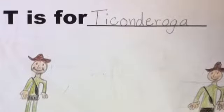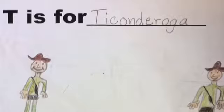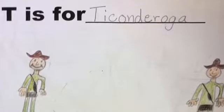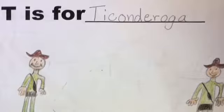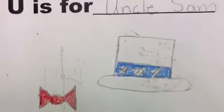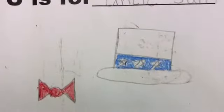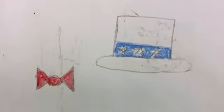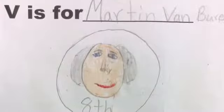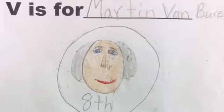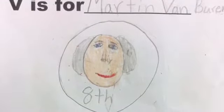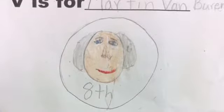T is for Ticonderoga because it means land between two waters. U is for Uncle Sam because it is a symbol of our country. V is for Martin Van Buren because he was the first president born in the U.S.